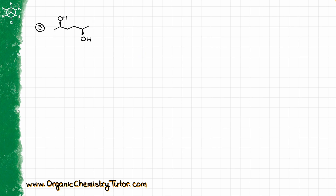Here is the next example. If you think about the plane of symmetry here, that molecule is not symmetrical because in one case we have the OH looking in one direction, and in another case the OH is looking in the other direction, so that molecule does not have a plane of symmetry.